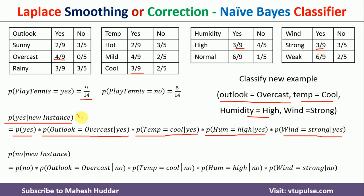For the probability of No given the new instance, we know probability of No is 5/14. But when we look up probability of Outlook equals Overcast given No in the table, it is 0/5, which is 0. If you multiply 0 by anything, you get a posterior probability of 0. This is the zero probability problem in the Naive Bayes classifier — we got 0 as a posterior probability for one of the classes, so we cannot continue and must remove this problem.